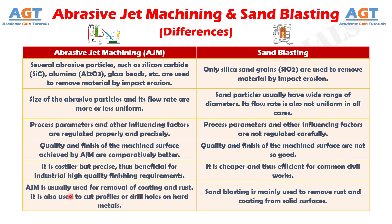Number 6: Abrasive jet machining is usually used for removal of coating and rust. It is also used to cut profiles or drill holes on hard metals. Whereas sandblasting is mainly used to remove rust and coating from solid surfaces.